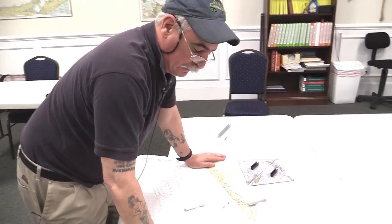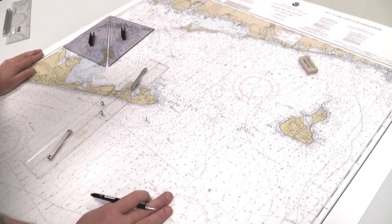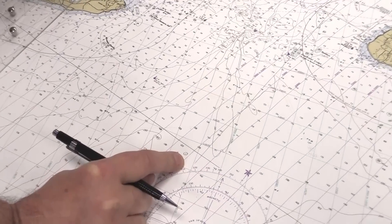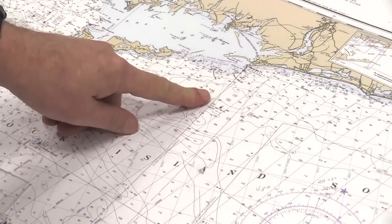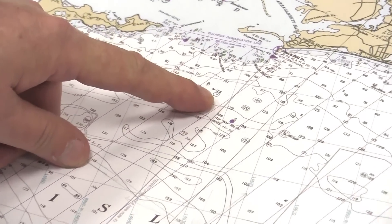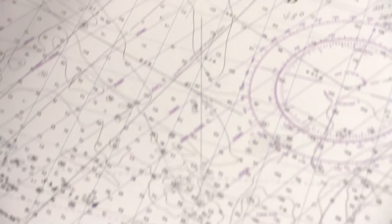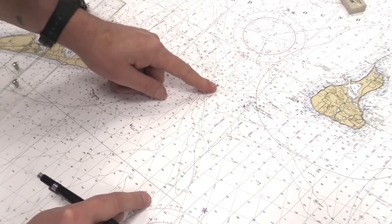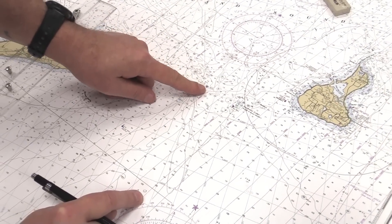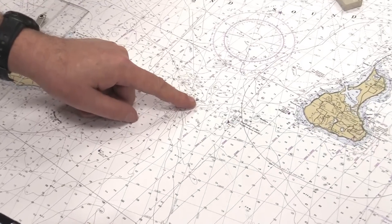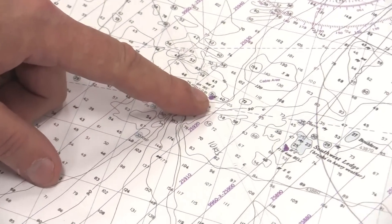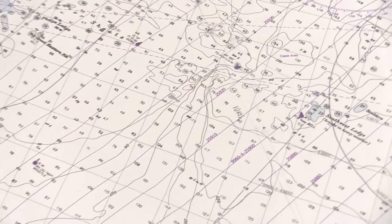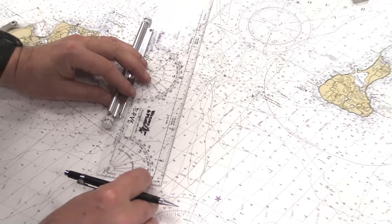Now let's say we're on a regular navigation chart and we want to go from point A here to point B up here. We want to know what course that is, and we also want to know when a certain buoy will be abeam — maybe the question on your Coast Guard exam will say at what time will buoy BIS be abeam; that's Block Island Sound. So again we're going to start off with the roll bars — and we see, oh no, it doesn't reach.